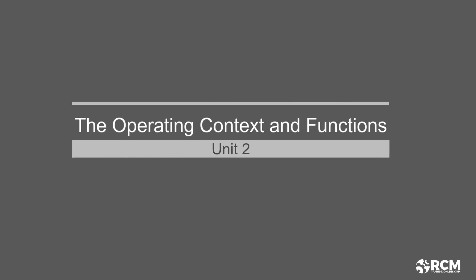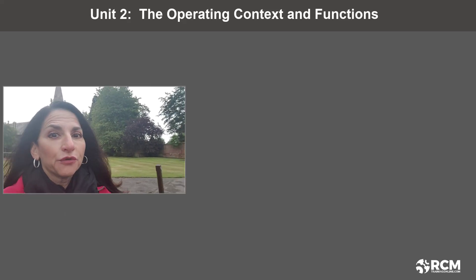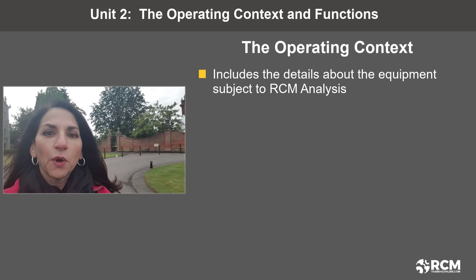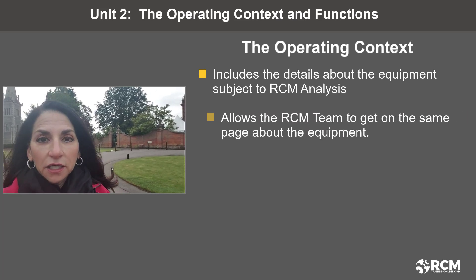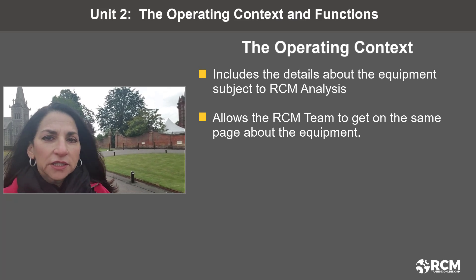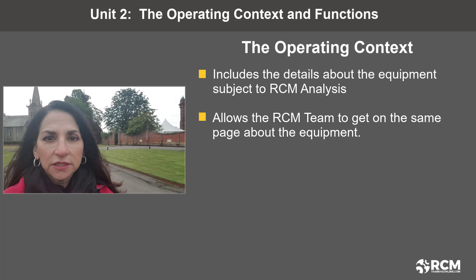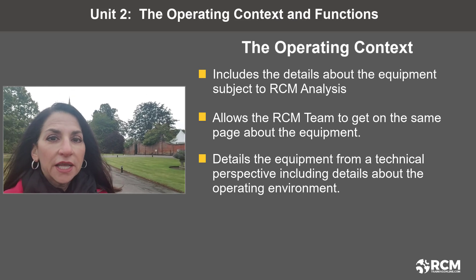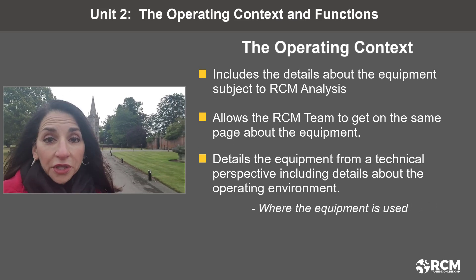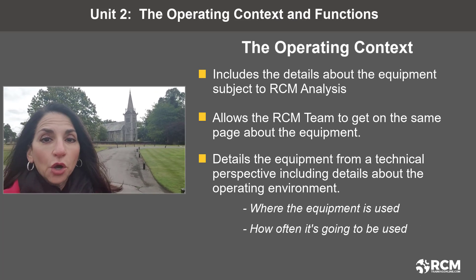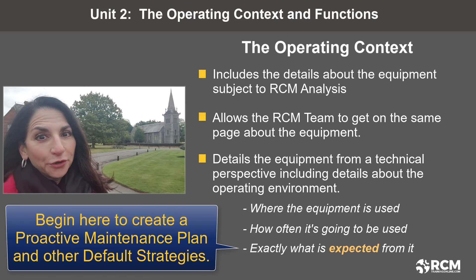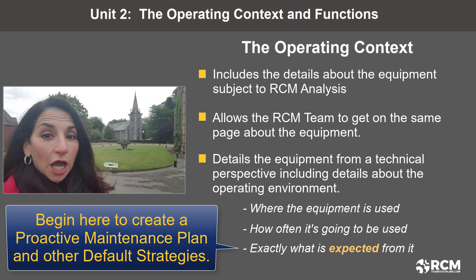The operating context and functions. When you do reliability centered maintenance the right way, you start by writing an operating context, which is basically like a story of what the equipment is all about. It allows the facilitator and the working group to get on the same page about the equipment. It details the equipment from a technical perspective but also identifies the operating environment — where the equipment is used, how often it's used, and exactly what is expected from it.